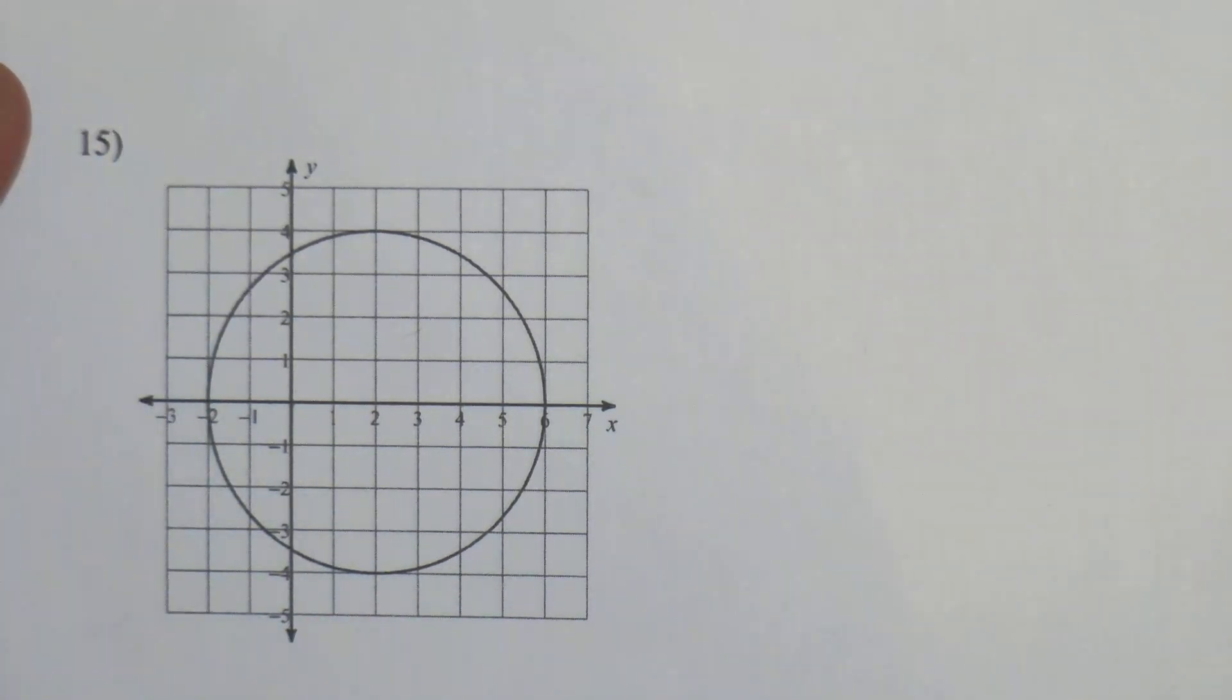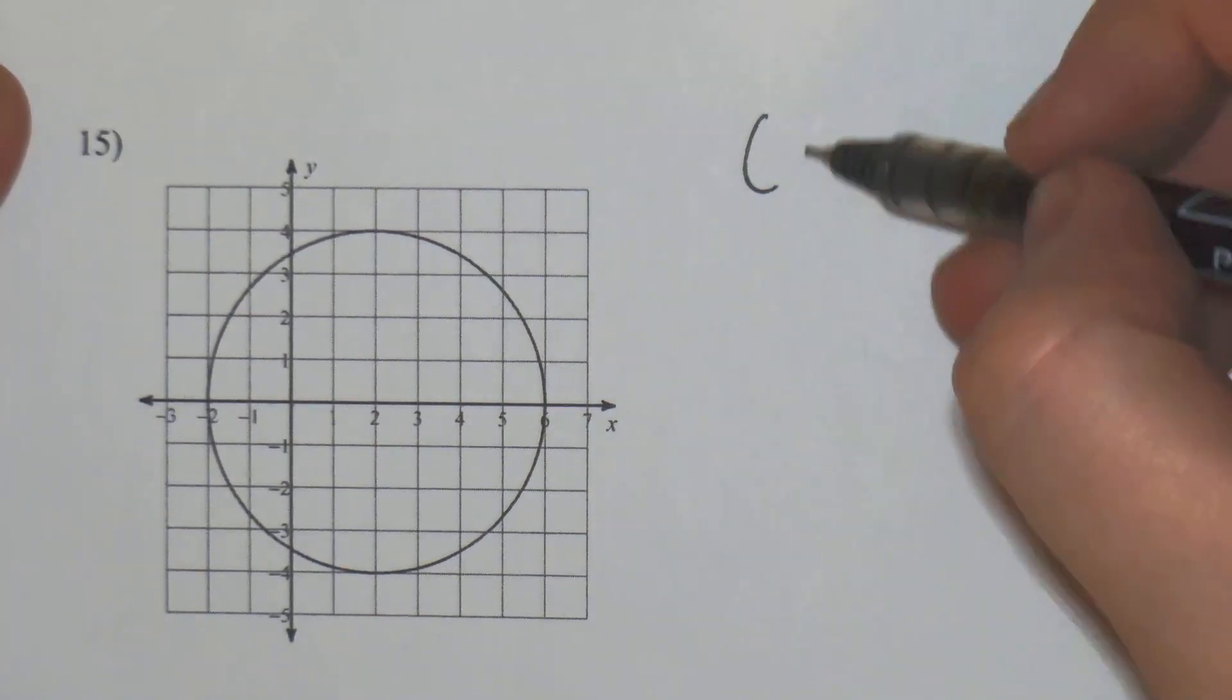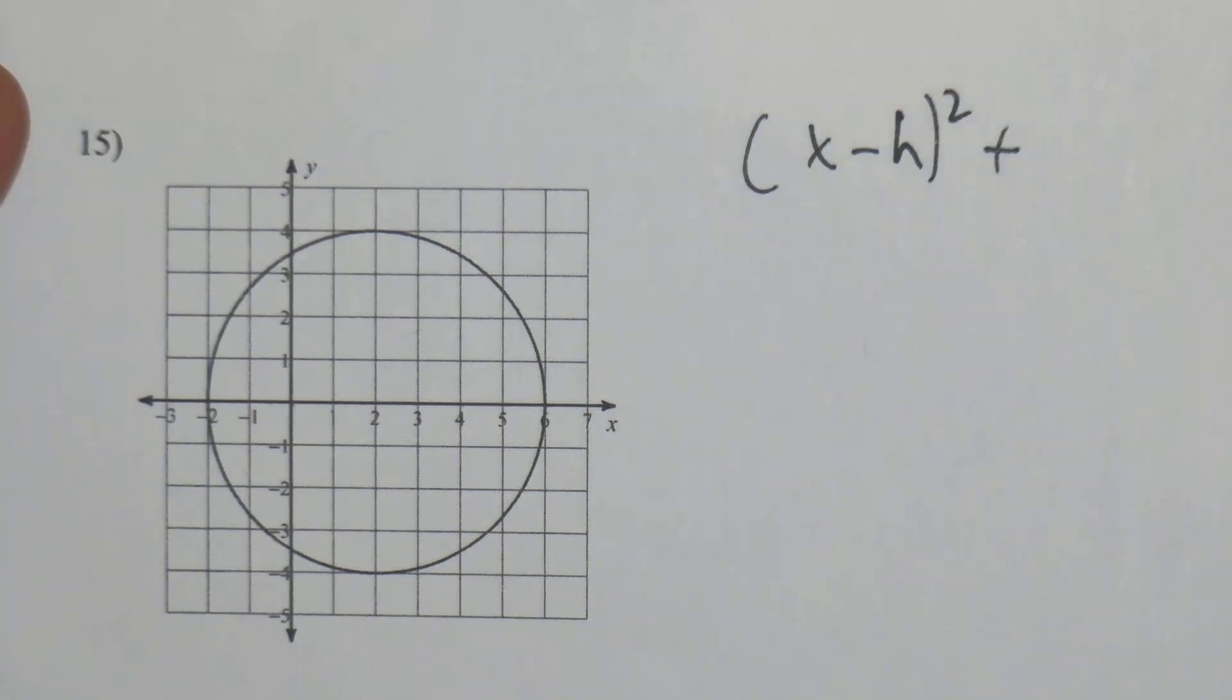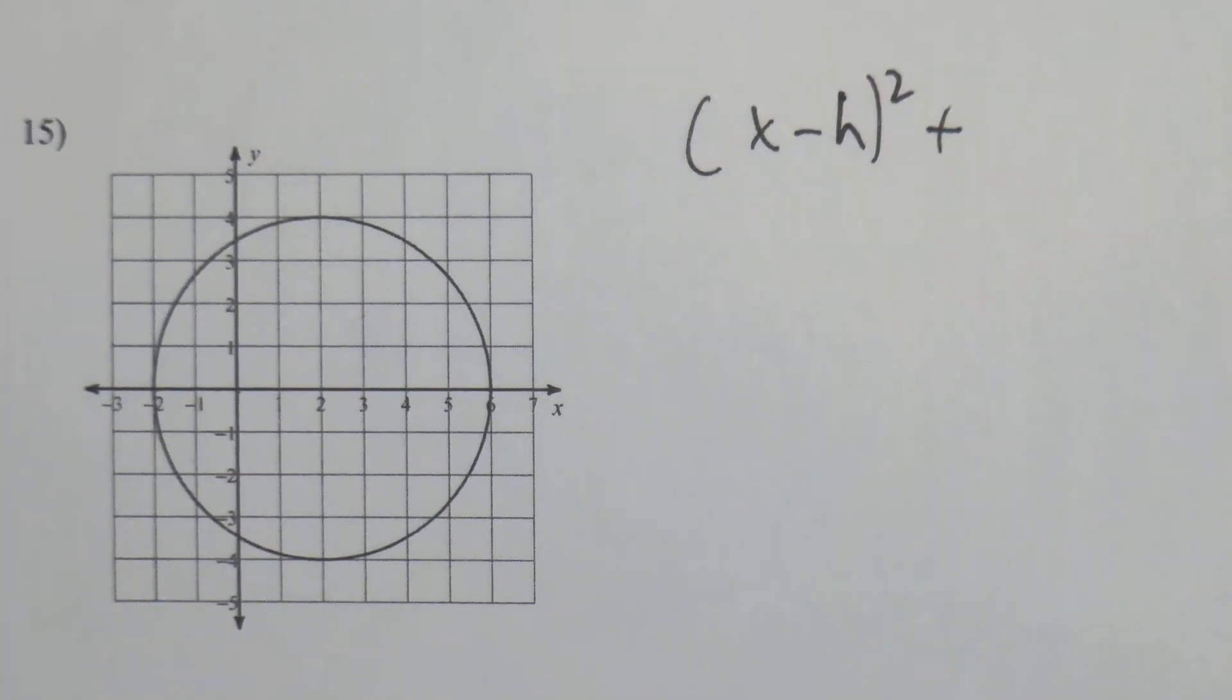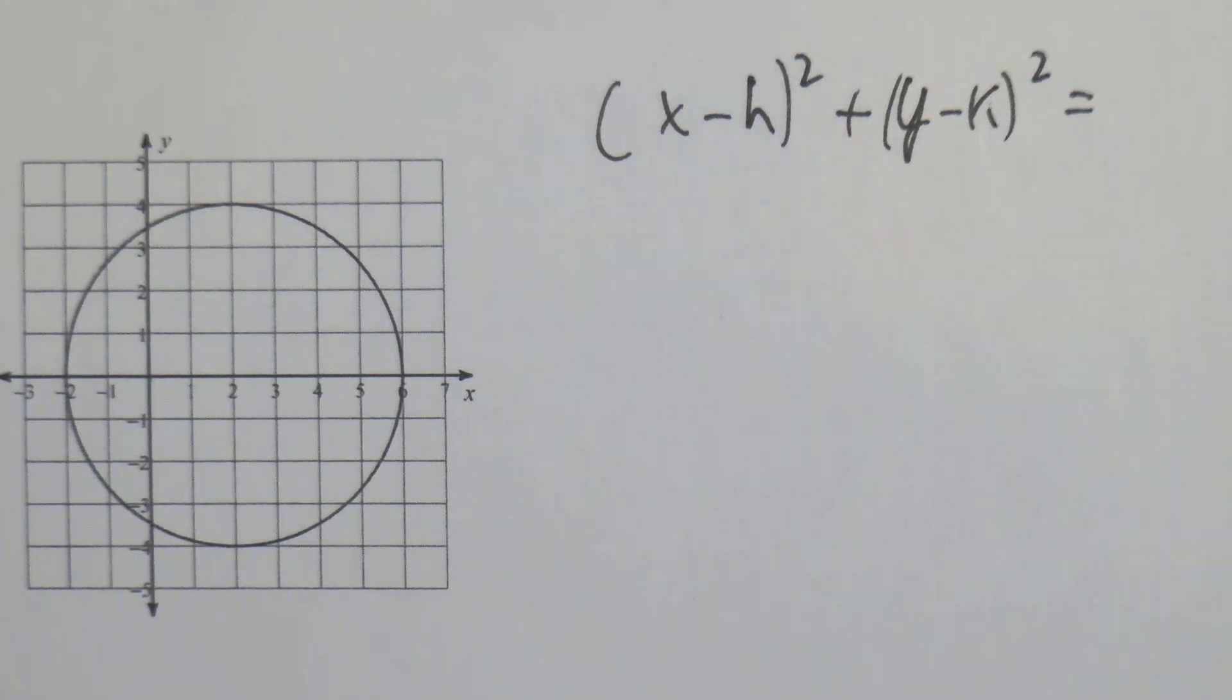Number 15, they want us to write an equation for this circle. So the formula for a circle is (x - h)² plus (y - k)² equals r².